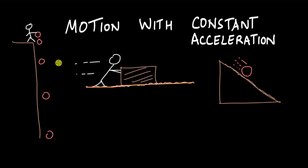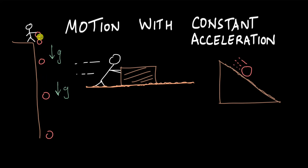For the first case, there is a constant acceleration which is acceleration due to gravity. There is a g which acts on the ball at all points, and as a result the speed with which the ball falls increases. At the beginning there is no speed, but it increases somewhat, then some more, then even more as it keeps on falling.